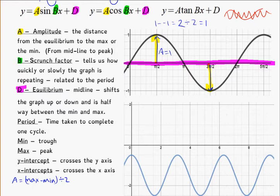So, in this case, A is equal to 1, D is equal to 0, or the equilibrium is equal to 0.